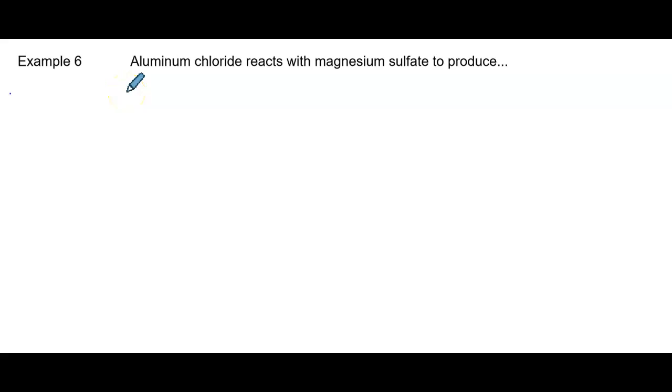Stoichiometry Notes, Example 6, Second Year Chemistry, Chem 2. Aluminum chloride reacts with magnesium sulfate to produce products. Please write a balanced chemical equation for this reaction.